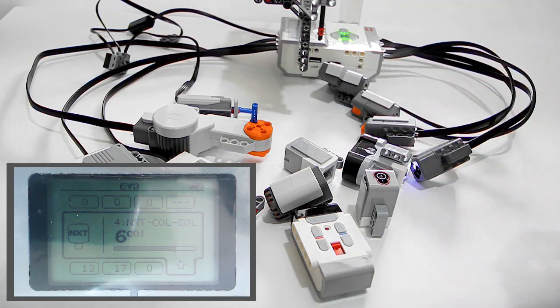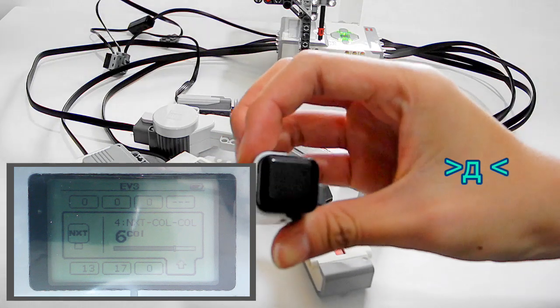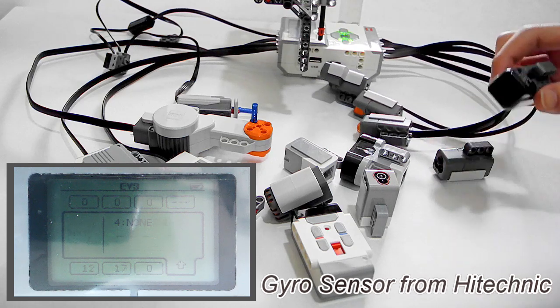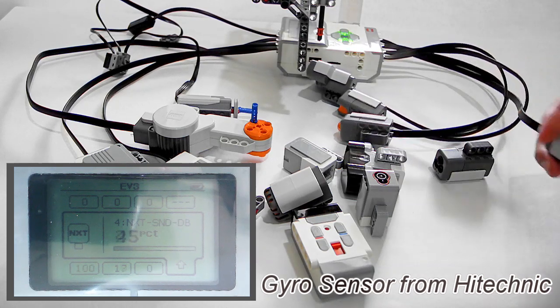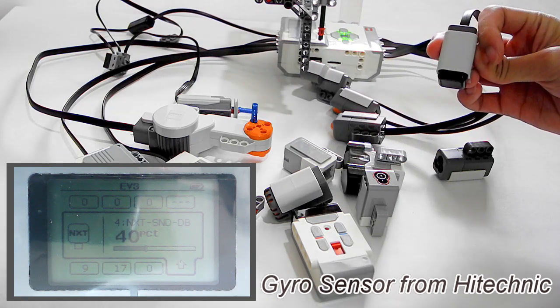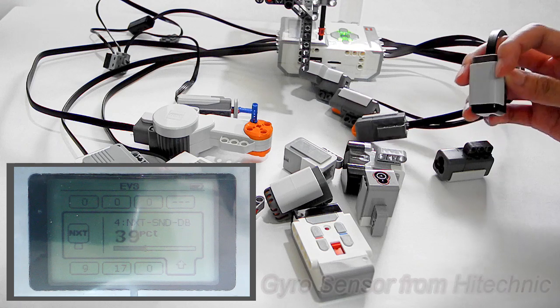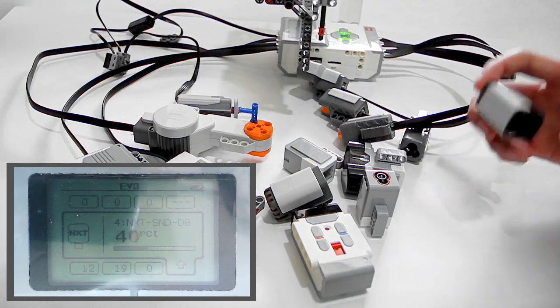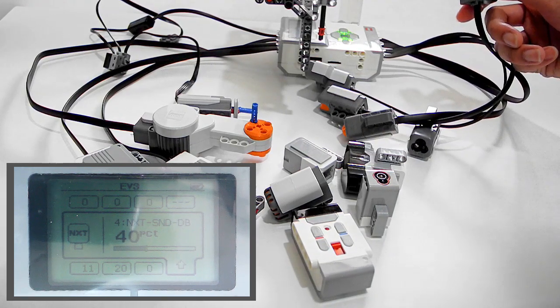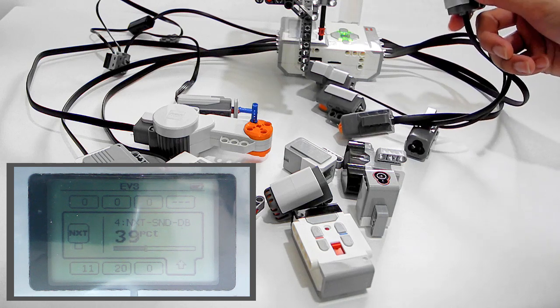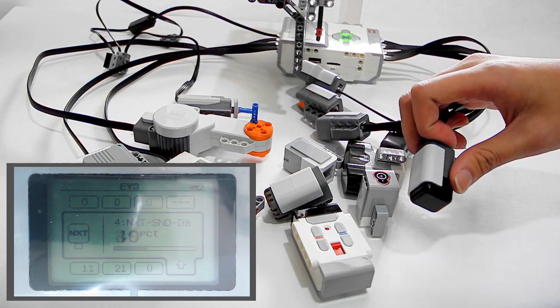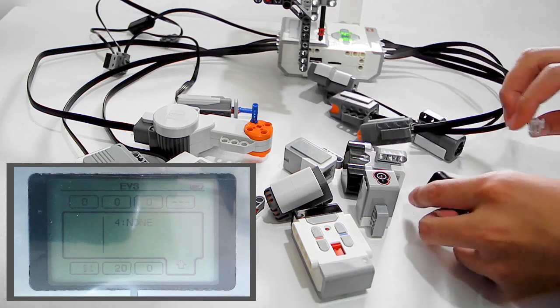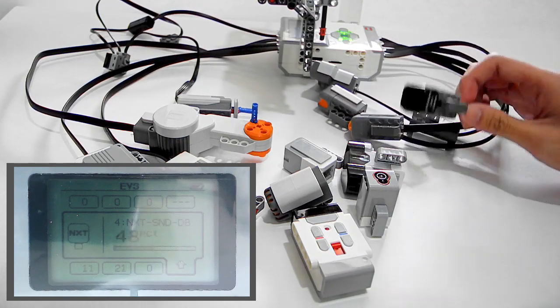And the last one is this one, the HiTechnic gyro sensor. This measures a little bit differently. It is used to measure the movement. When it is steady, it shows 0. And when I move, it changes. And when I keep it from moving, it is 0 again.